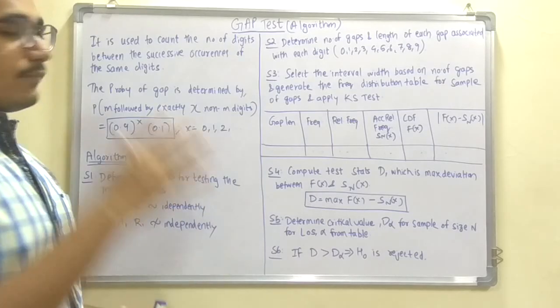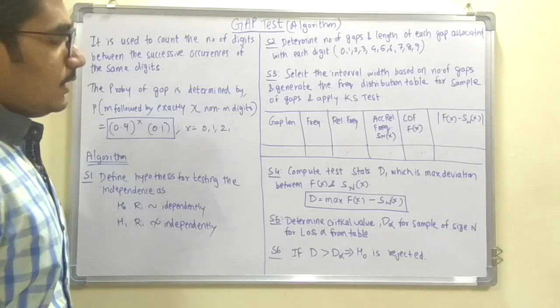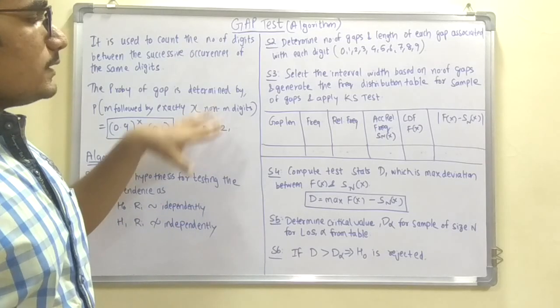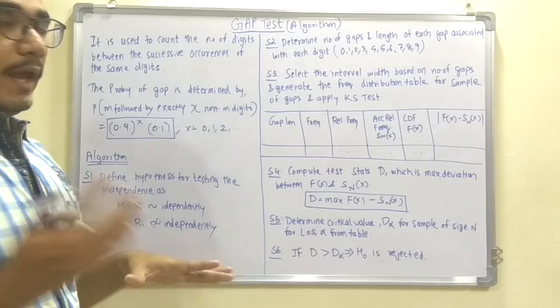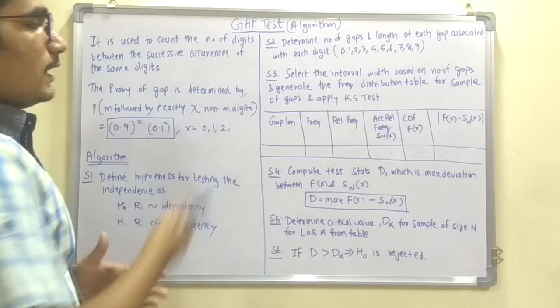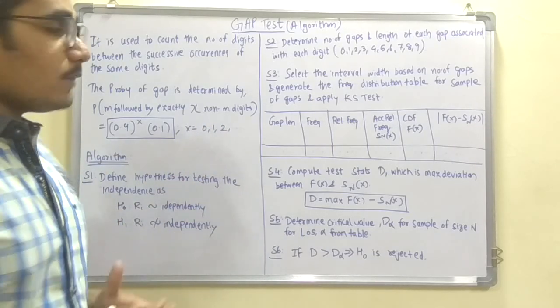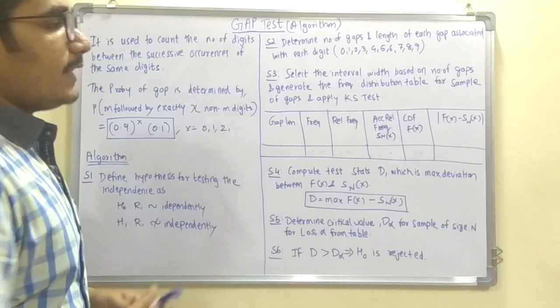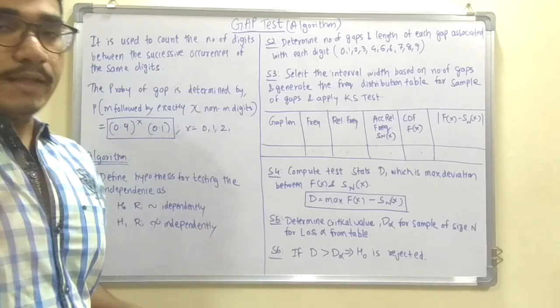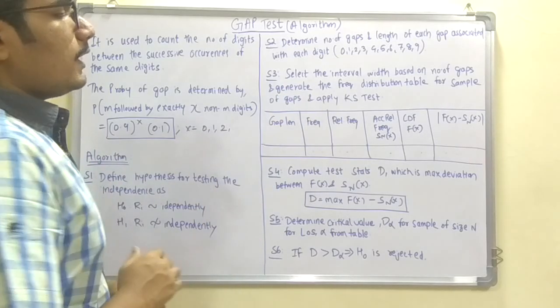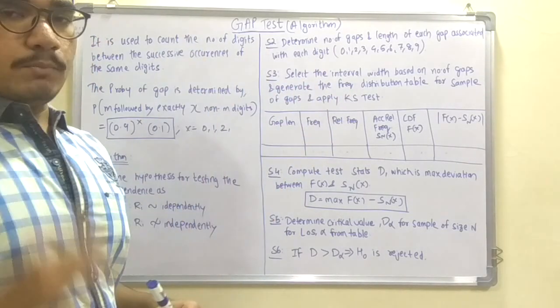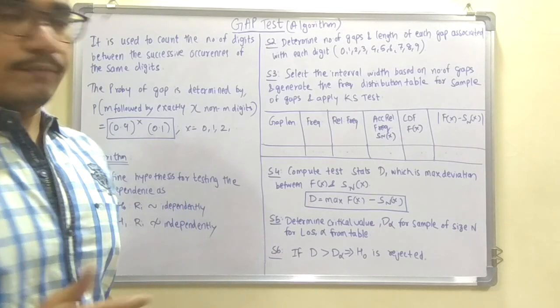You calculate for all digits 0 to 9 and prepare this table. The table consists of the gap length, the frequency encountered, relative frequency, cumulative relative frequency Sn(x), the CDF of the theoretical function F(x), and finally you deduct Sn(x) from F(x) within a mod so you get all positive answers.